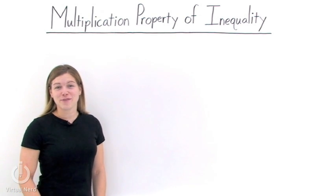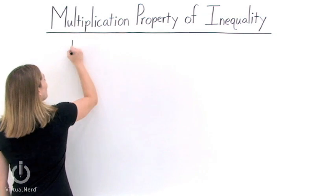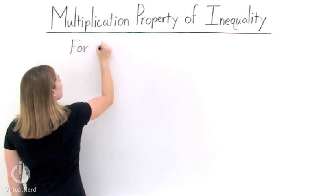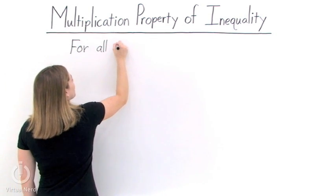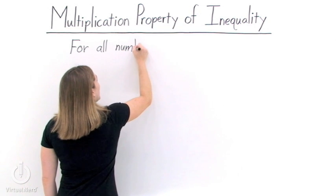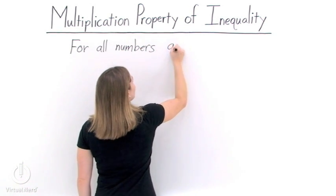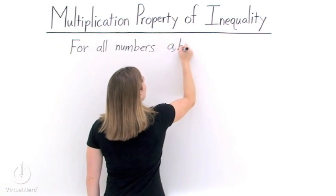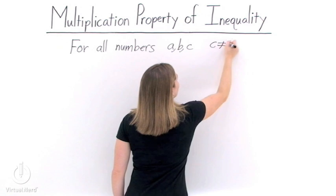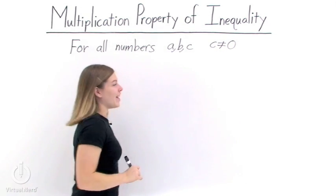Let's look at the multiplication property of inequality. This property states that for all numbers a, b, and c, with c not equaling 0, then we have the following.